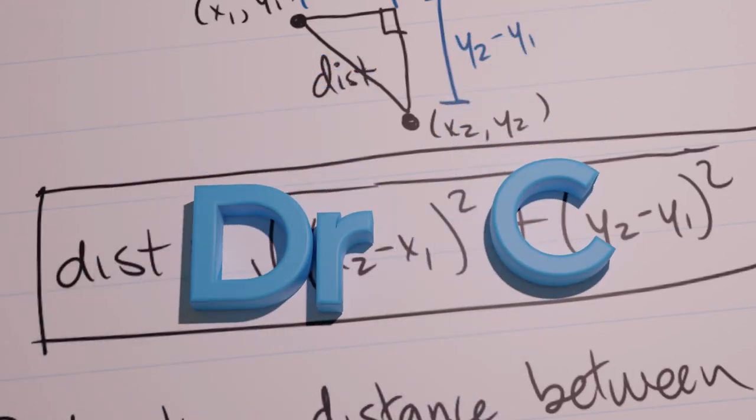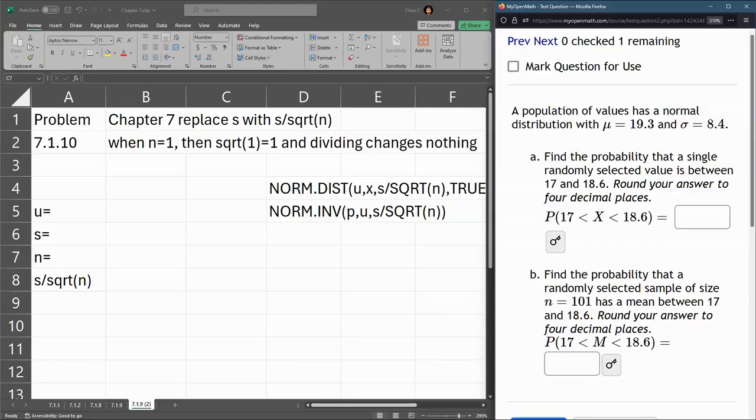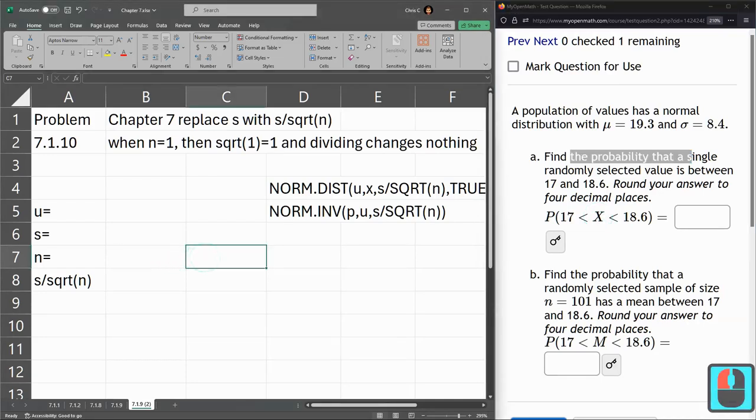We're looking at 7.1.10 in this question, part A, single value, so that means n is 1. But now this is different because we're between, we're greater than 17 and less than 18.6. So what I'm going to do is break this into two probabilities.